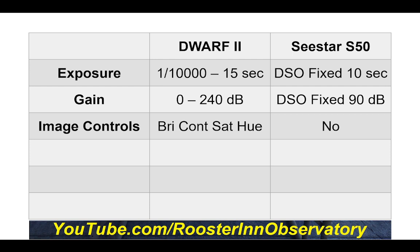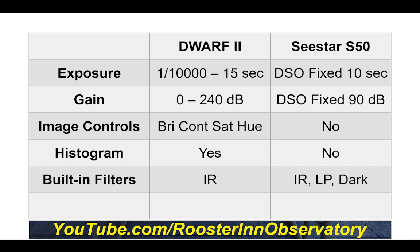In addition to exposure, gain, and white balance, the Dwarf 2 has image controls for brightness, contrast, saturation, and hue — none of which the Sea Star offers. The Dwarf also offers a histogram you can manipulate during deep sky object stacking, which is not available on the Sea Star.